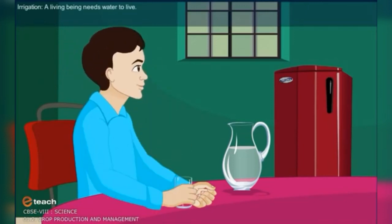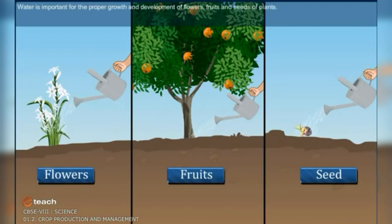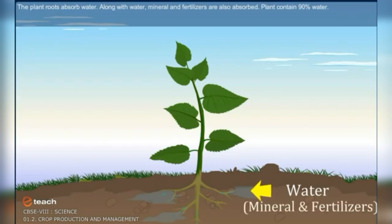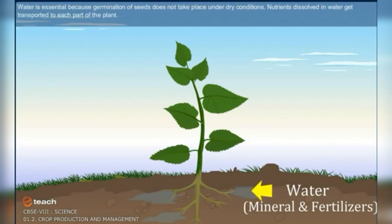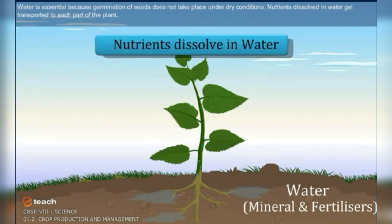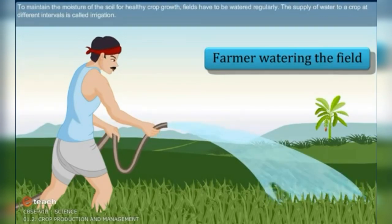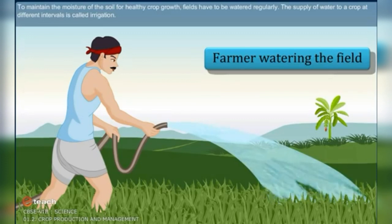Irrigation. A living being needs water to live. Water is important for the proper growth and development of flowers, fruits, and seeds of plants. The plant roots absorb water, along with minerals and fertilizers. Plants contain 90% water. Water is essential because germination of seeds does not take place under dry conditions. Nutrients dissolved in water get transported to each part of the plant. To maintain the moisture of the soil for healthy crop growth, fields have to be watered regularly. The supply of water to crops at different intervals is called irrigation.